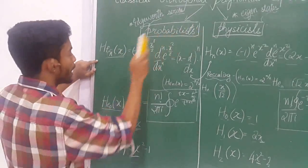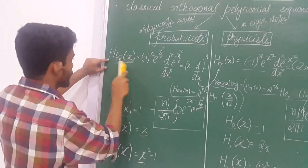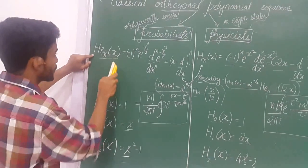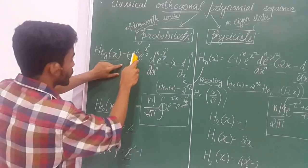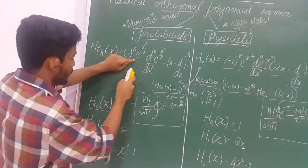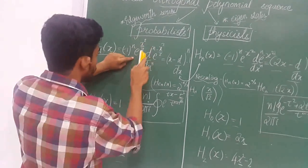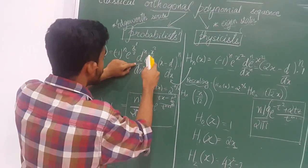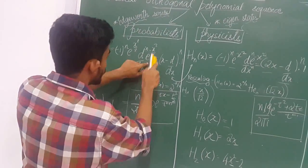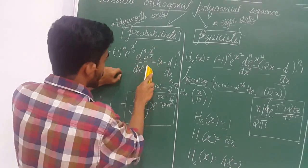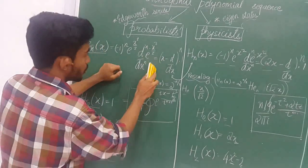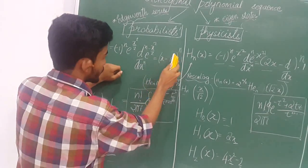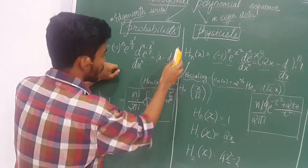Probabilistic Hermite polynomials can be expressed as H_n(x) = (-1)^n × e^(x²/2) × the nth derivative of e^(-x²/2), which equals (x - d/dx)^n.